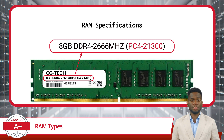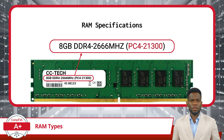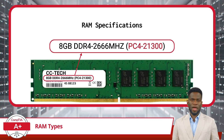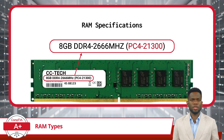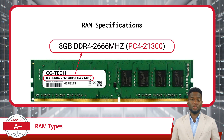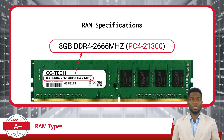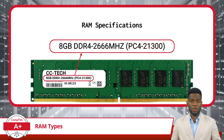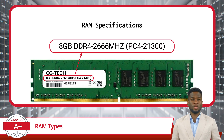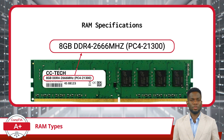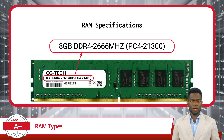Lastly, we have PC4-21300. This is another way of expressing the speed of the RAM, particularly in terms of its theoretical maximum bandwidth. The PC4 part denotes that it's DDR4 memory. As for the 21,300, this indicates that the RAM can theoretically transfer up to 21,300 megabytes per second of data. To put it all together, this stick of RAM has a capacity of 8GB, uses DDR4 technology, is capable of operating at a speed of 2,666 megahertz, and has a bandwidth of 21,300 megabytes per second.